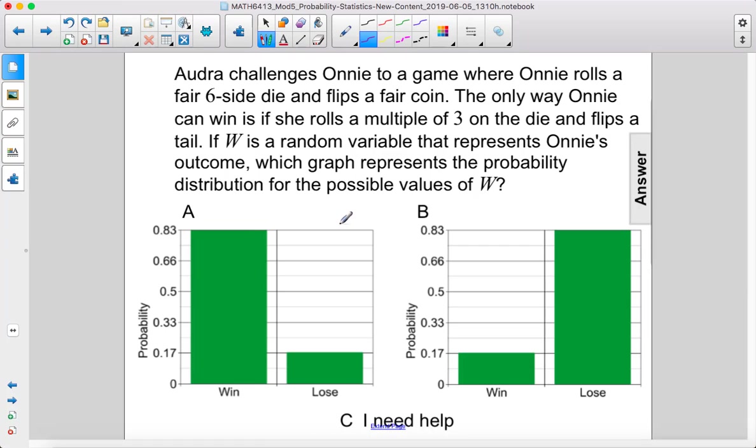If w is a random variable that represents Ani's outcome, which graph represents the probability distribution for the possible values of w?